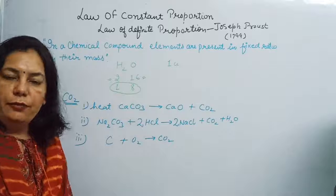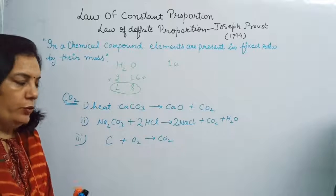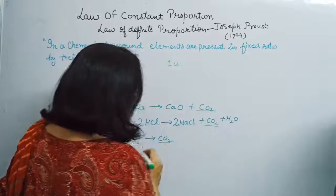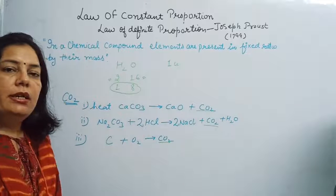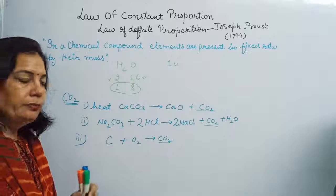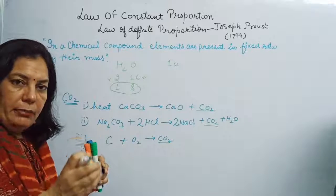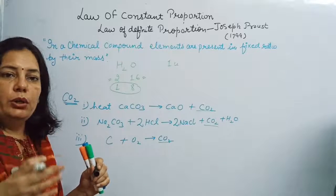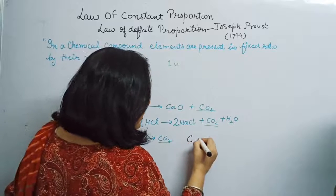Here these are three different chemical methods by which carbon dioxide can be produced. But when we study all three different samples, we find that carbon and oxygen are present in a fixed ratio by their mass, regardless of which chemical reaction was used.